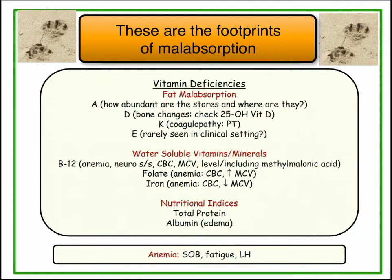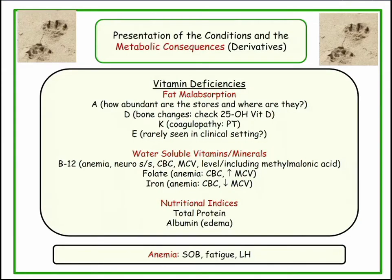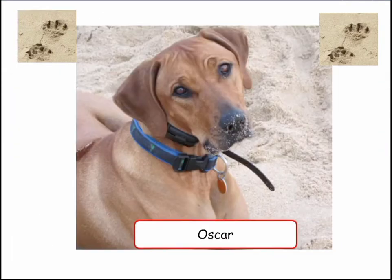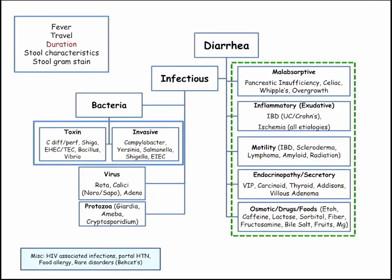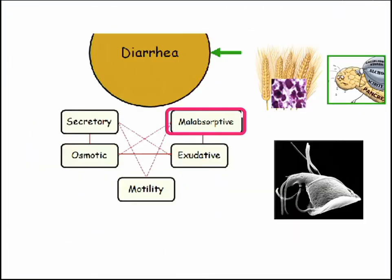Fat malabsorption — check. Water-soluble vitamins, minerals deficiencies — check. Nutritional deficiencies — check. Signs and symptoms of anemia — check. It's all factored into the diarrheal syndromes. Remember, we also have the infectious category. The footprints will lead you to the diagnosis.